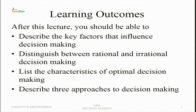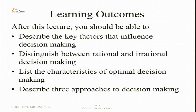A distinction is possible between rational and irrational decision making. In most systems individuals should take rational decisions. Rationality assumes that information about all possible alternatives — in terms of the probability with which these alternatives can occur and the consequences of an action taken — is known. If that is not the case, individuals often resort to irrational decision making. You should also be able to list the characteristics of optimal decision making and describe three approaches to decision making, to determine how decision making can be enhanced in different situations.